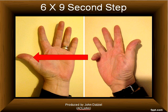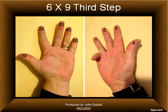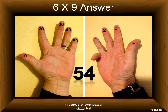For the second step, all the fingers and thumbs on the left of the finger that we've just bent over are counted as tens, so we have fifty. And the third step: we count the fingers and thumbs on the right of the finger that we bent over, and they're counted as units, so we have four. So if you add those two together, we have the answer of six times nine equals fifty-four.